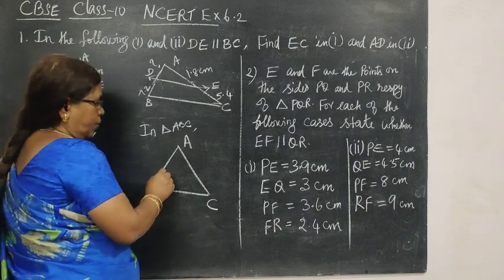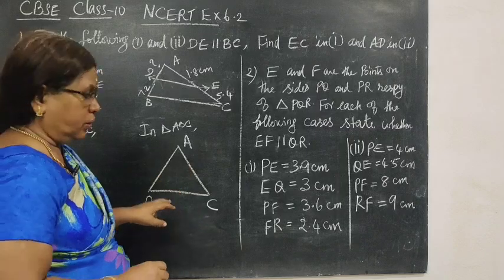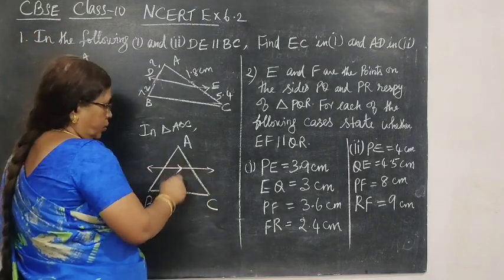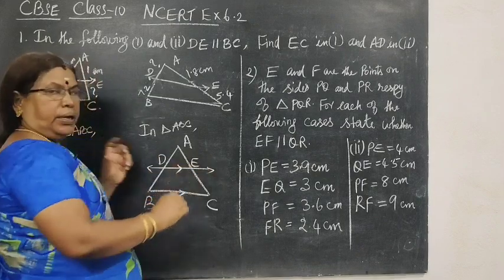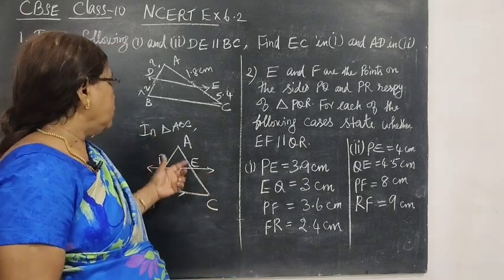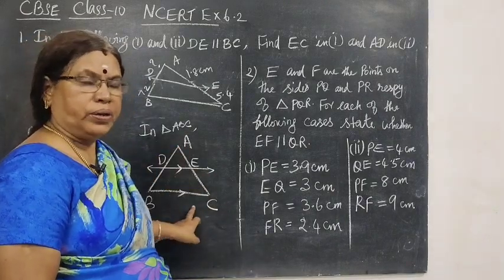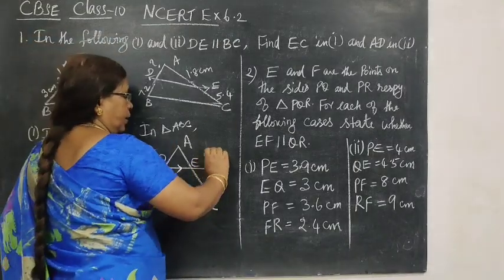If we draw a line parallel to any one side of a triangle, I am drawing a line parallel to BC. DE parallel to BC. If we draw a line parallel to any one side, it divides the other two sides in the same ratio.